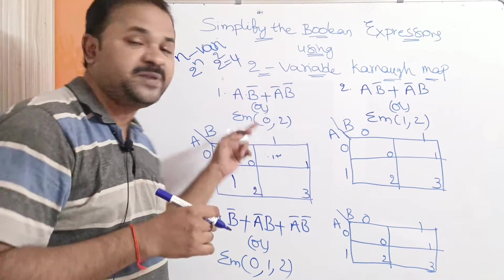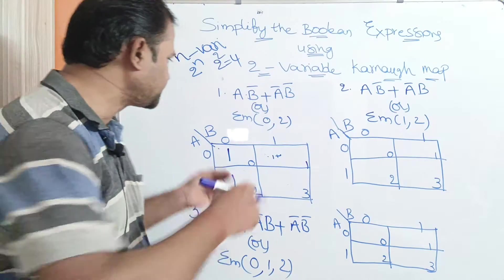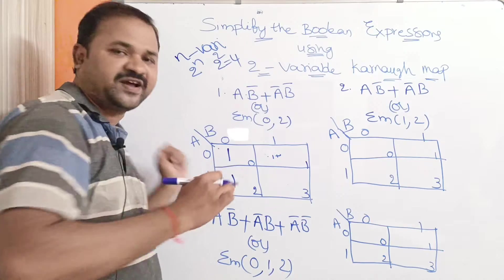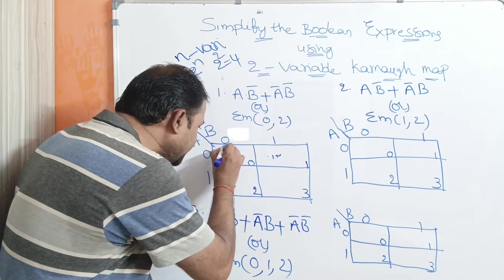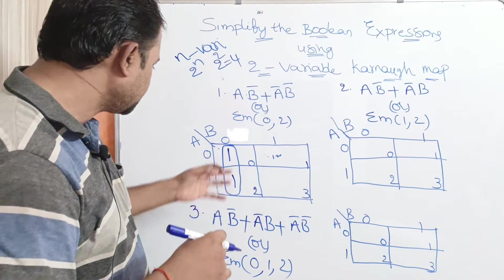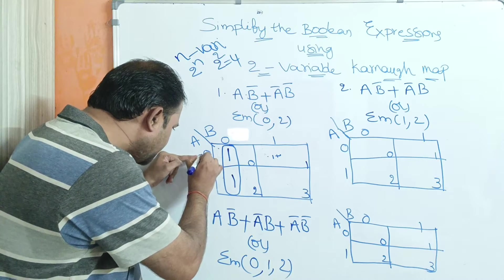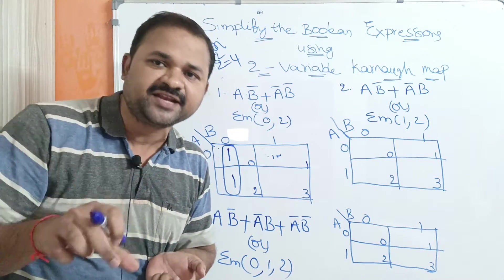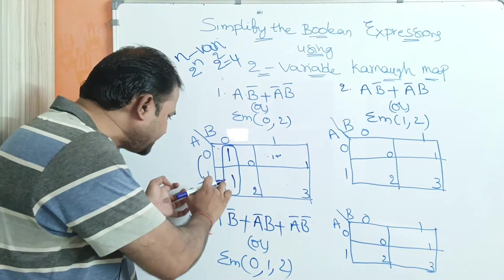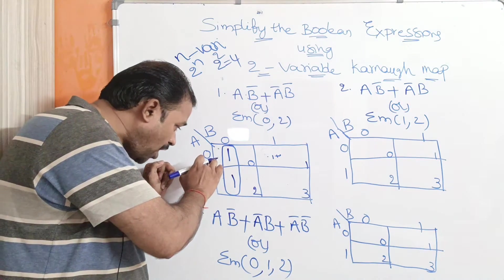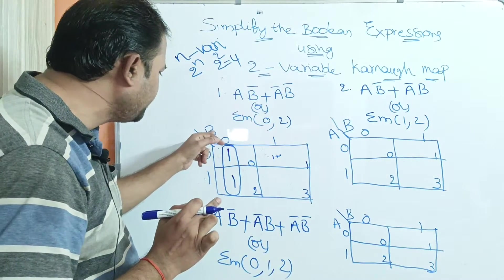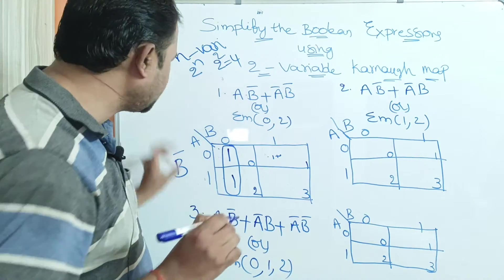Equivalently, sigma m of 0 comma 2 means minterm 0 gets a 1, and minterm 2 gets a 1. We can now form these two cells as a pair. Observing the pair, a is changing from 0 to 1 — it appears in both complemented and uncomplemented form — so we can neglect a. The remaining variable is b equals 0, which means b̄. The simplified expression for the first problem is b̄.